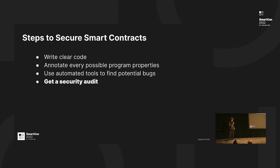The final step is to get a security audit, because nothing is going to beat a security audit — auditors are trained to effectively find bugs. Step two is also essential, because if you perfectly annotate the program properties, auditors will have a better time understanding your intention for writing the code. So they'll audit more effectively and you'll get a much better report of what the security issues in your program are.